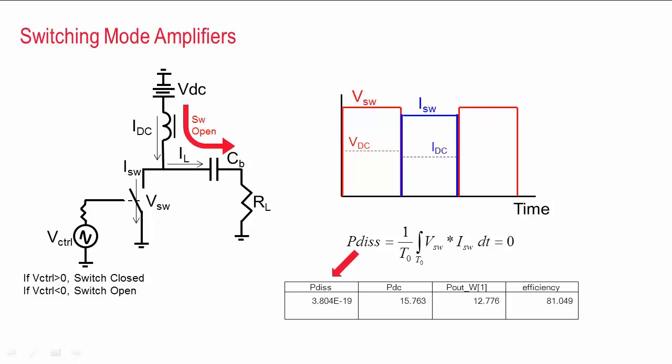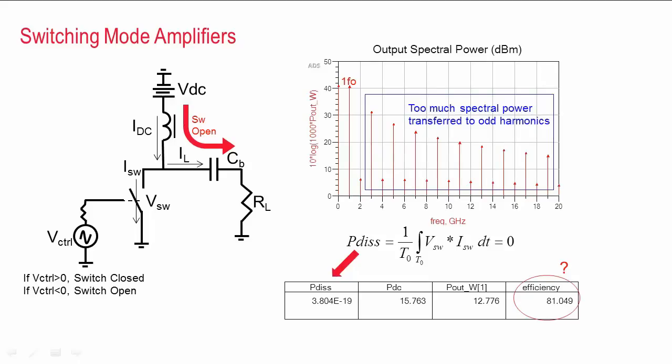Now at first glance it might seem like this amplifier should be extremely efficient, but it turns out that about the best you can do here is around 81% efficiency with this topology, because a lot of the power ends up getting lost at the harmonic frequencies, not being transmitted through the fundamental.